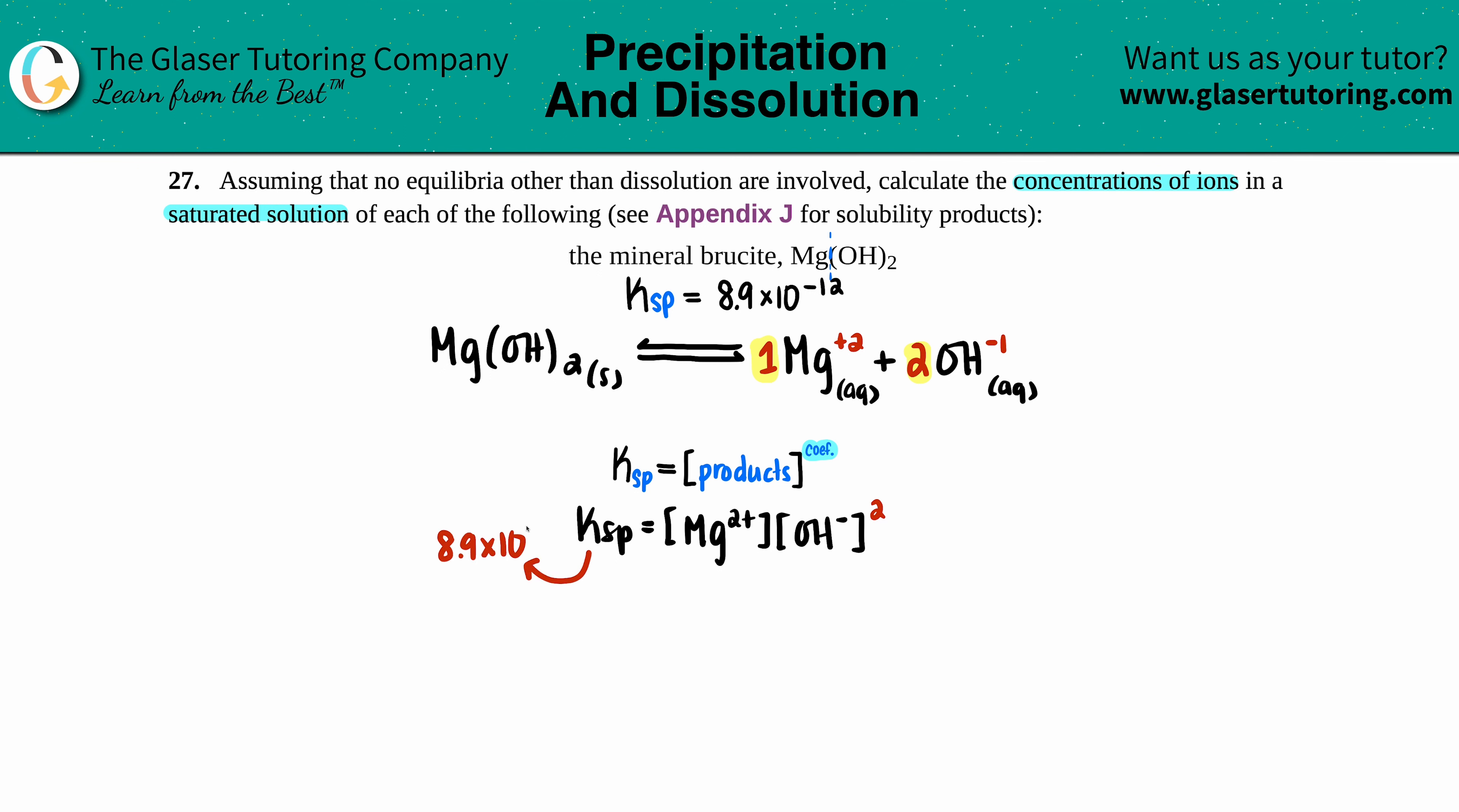I don't know what these concentrations are, so I'm going to use ratios and plug in a variable. For the magnesium, I don't know what it would be at equilibrium, so I'll label it as x. Technically this would be one times x, but one times x is just x.